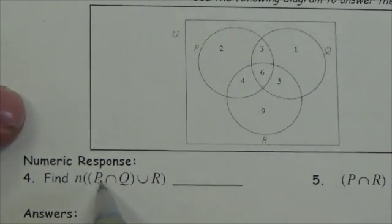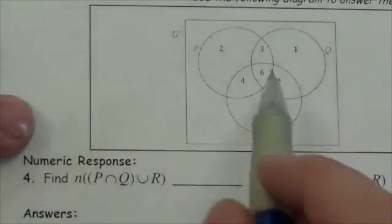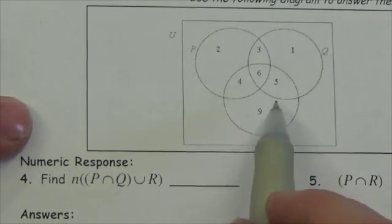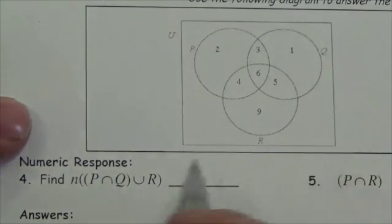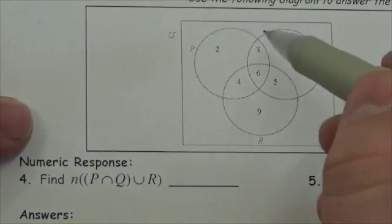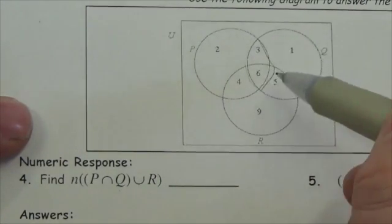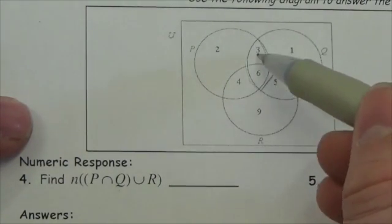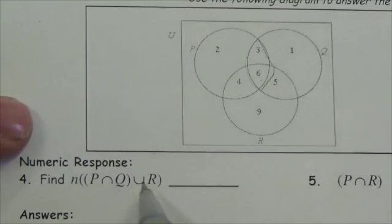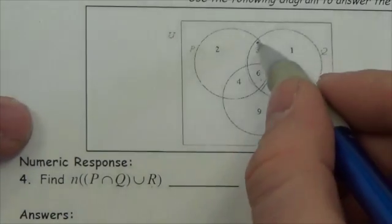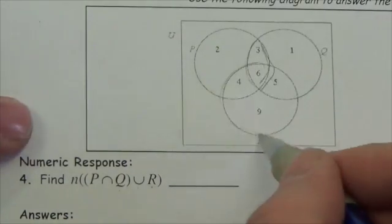Okay, let's deal with first of all P intersection Q. You're supposed to understand these to be the number of elements in each one of these sets here. So P intersection Q is going to be this region right here, so there's 9 in there. Union R, so P intersection Q union R is this entire region right here.